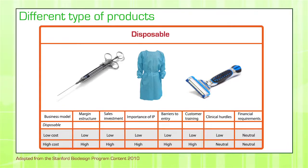In disposables and other business models, you analyze the margins, sales, the importance of intellectual property, barriers and benefits to entry in a certain market, the training the customer requires to use the device, and the clinical hurdles and financial requirements to bring your product to market. For low-cost disposables specifically, there is probably very low importance on IP, but they tend to be neutral or high in financial requirements, since low-cost medical devices require sophisticated manufacturing. In other types of disposables, those characteristics might change radically.